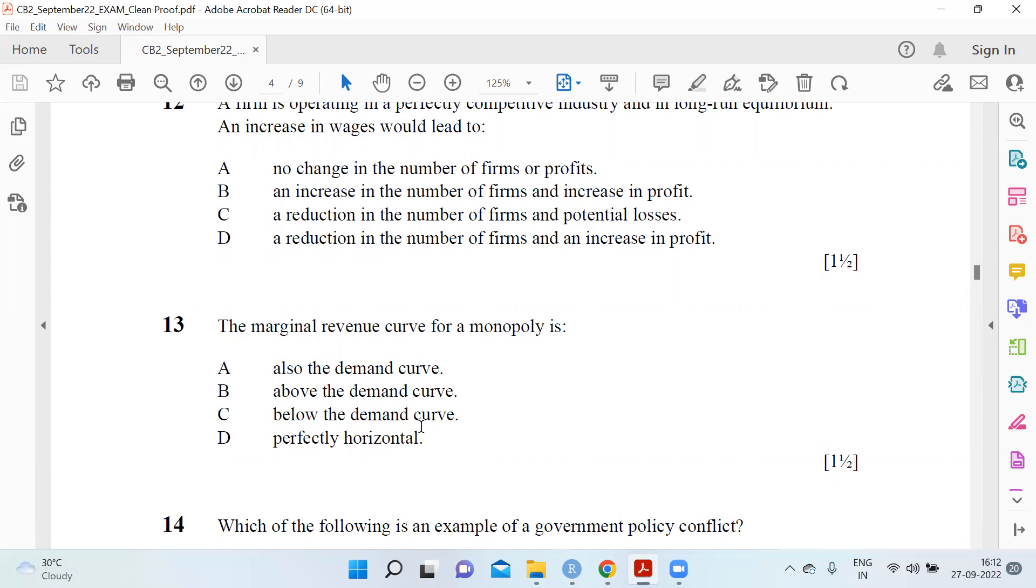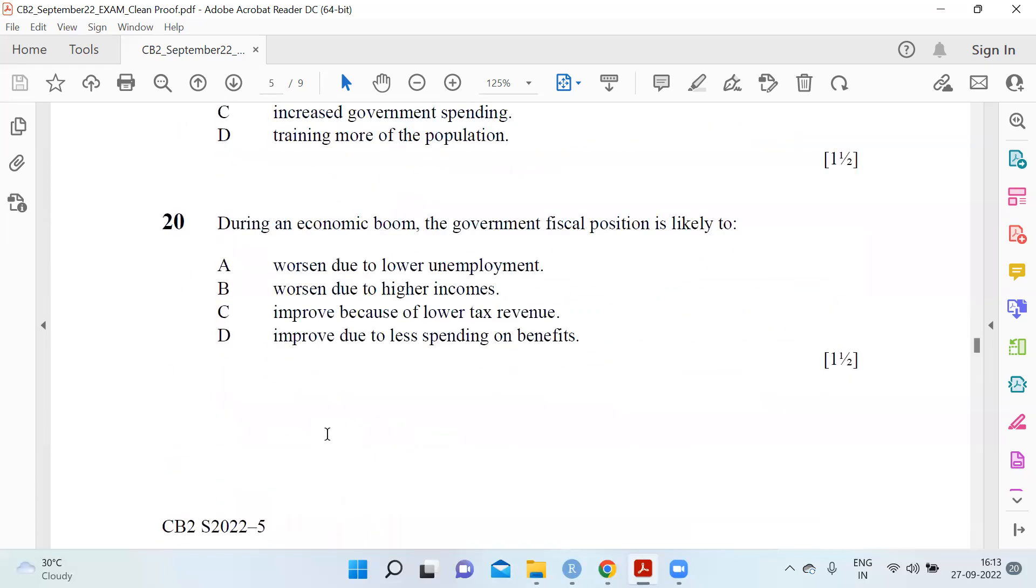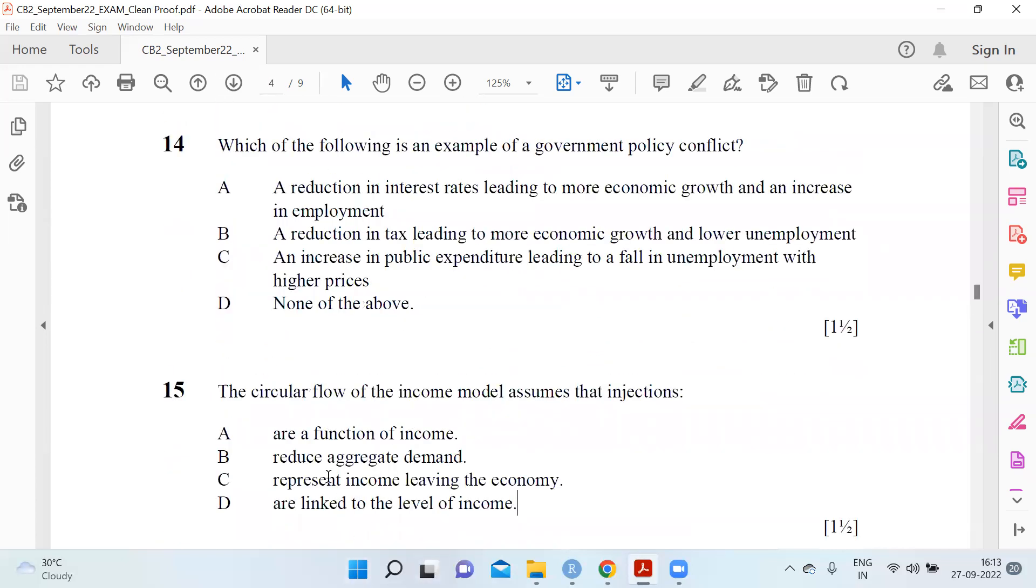Which of the following is an example of a government policy conflict? A reduction in interest rates leading to more economic growth and increased employment - no. A reduction in tax leading to more economic growth and lower unemployment - no. An increase in public expenditure leading to a fall in unemployment with higher prices - 14 C. Circular flow of income model assumes that injections are linked to the level of income.